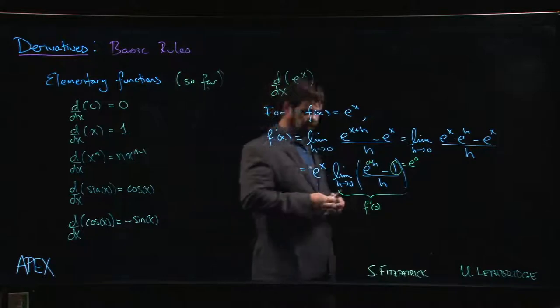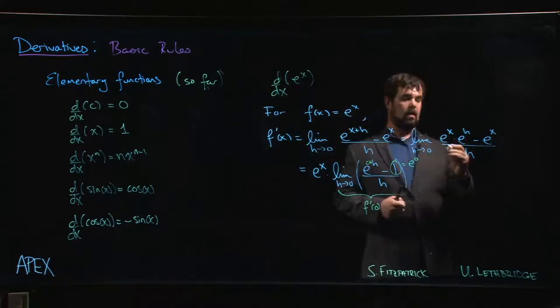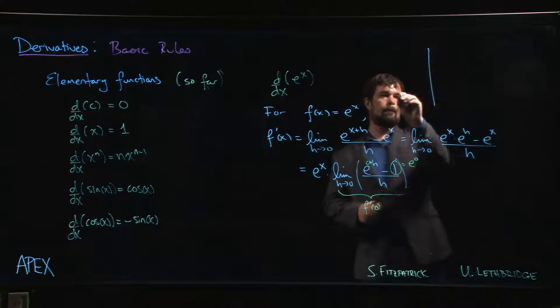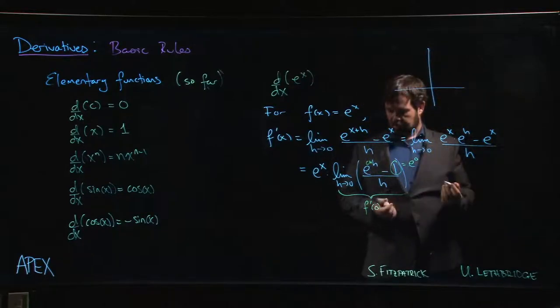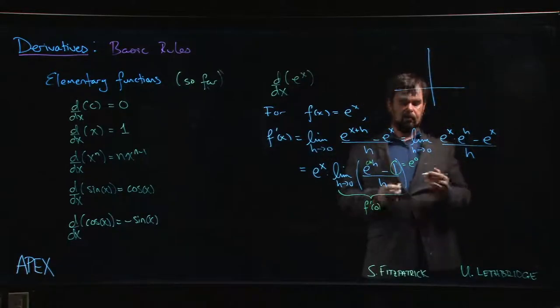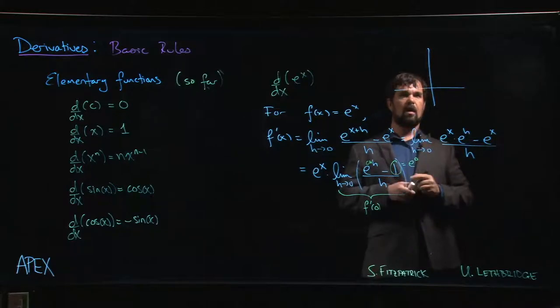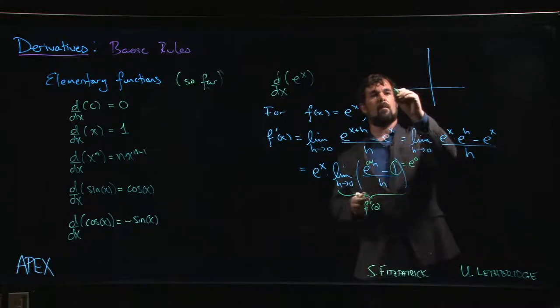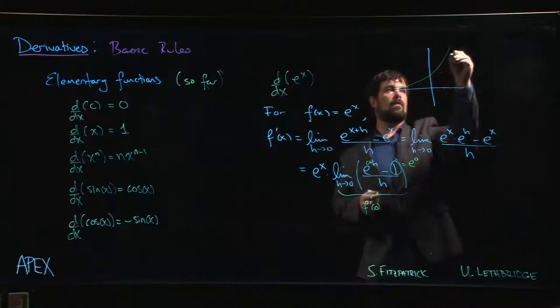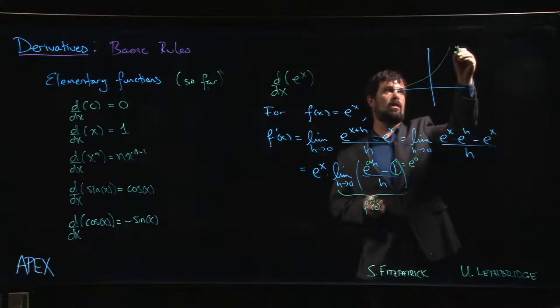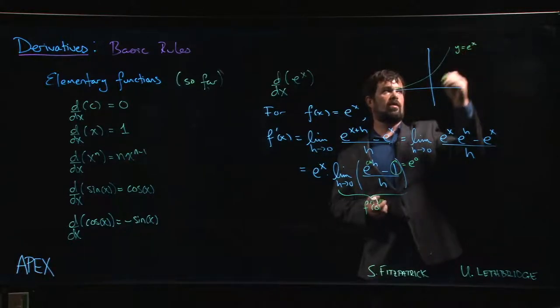So the question remains, well, what exactly is this f prime of 0? Well, f prime of 0 is the slope of the tangent line at 0. And we know what the graph of an exponential function looks like, right? Here's y equals e to the x.